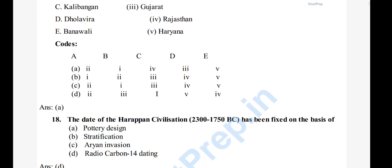Question 18: The date of Harappan civilization is 2300 to 1770 BCE.